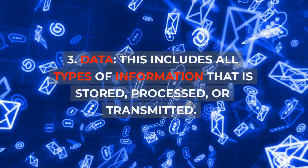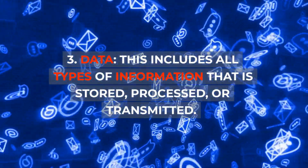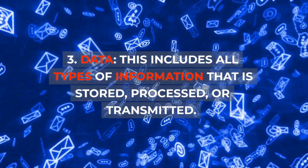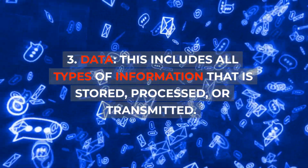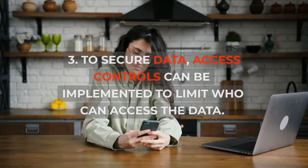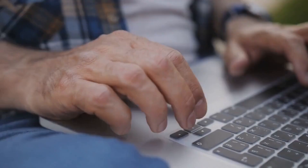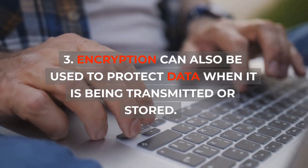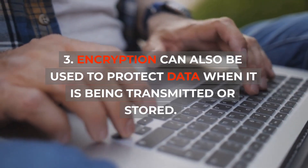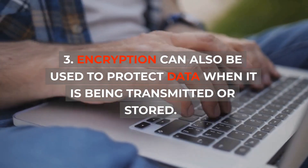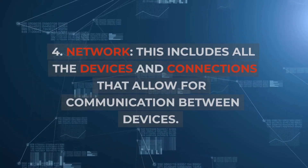3. Data: This includes all types of information that is stored, processed, or transmitted. To secure data, access controls can be implemented to limit who can access the data. Encryption can also be used to protect data when it is being transmitted or stored.